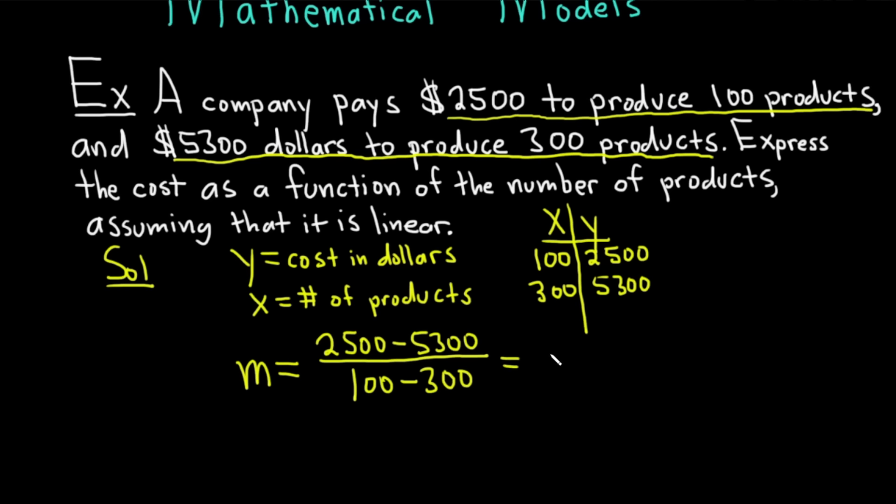This is equal to negative 2,800 over negative 200. And that's equal to 14. So we have a slope of m equals 14. I'm going to put that in a box because that is an accomplishment. We have done good.